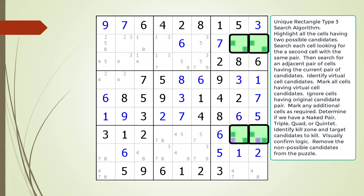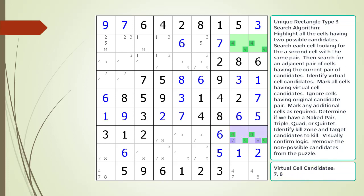We have found a complete Unique Rectangle Type 3 pattern in the puzzle. The pattern is composed of four cells. Two of the four cells have the same two possible candidates. The other two cells have some number of additional candidates. The additional candidates in both cells form a single virtual cell with the numbers 7 and 8 now highlighted in purple.